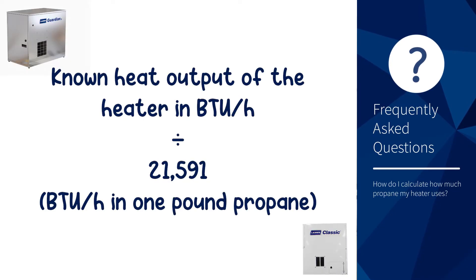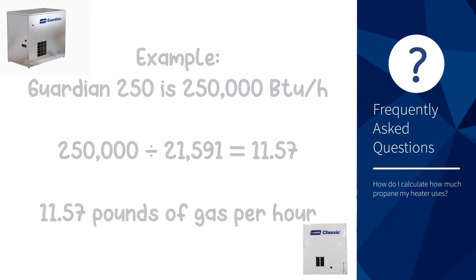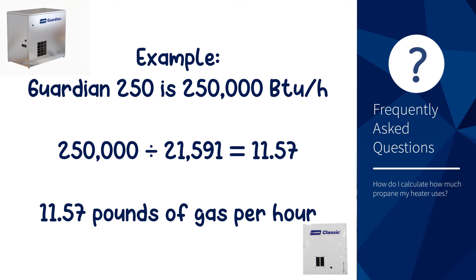Take the known heat output of the heater, expressed in BTU, and divide that by 21,591, which is the BTU in one pound of propane. For example, a Guardian 250 is 250,000 BTUs — divide that by 21,591 and you get 11.57 pounds of gas per hour.